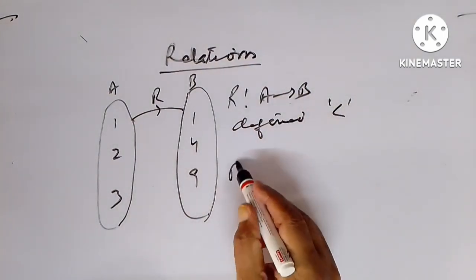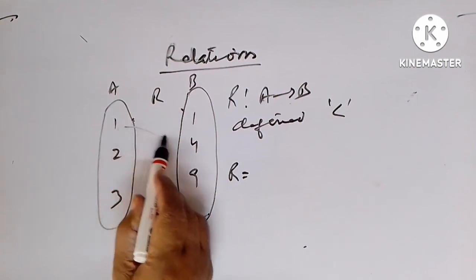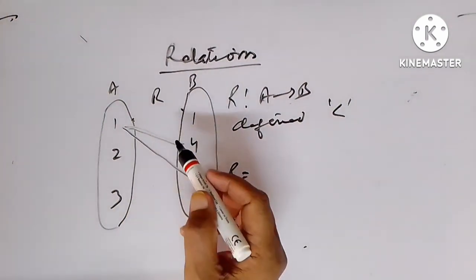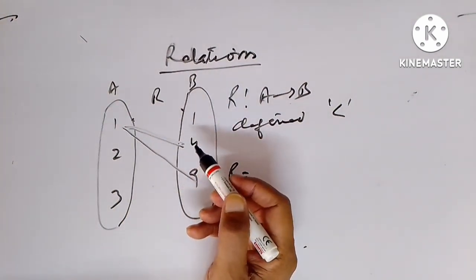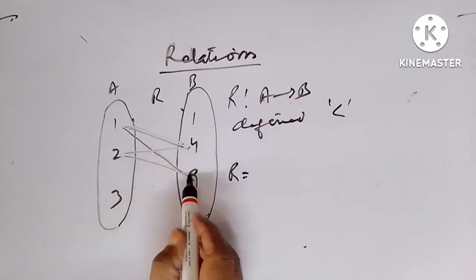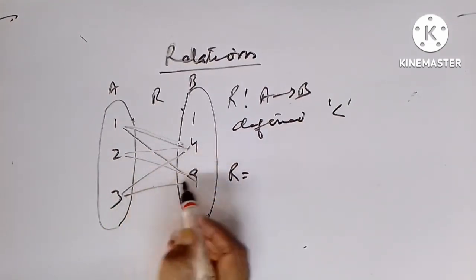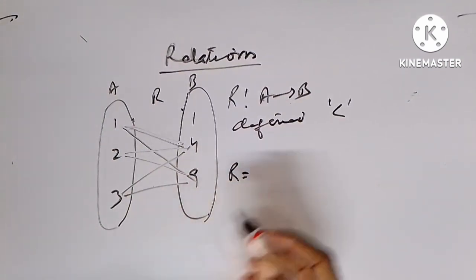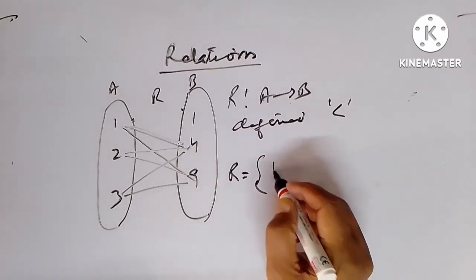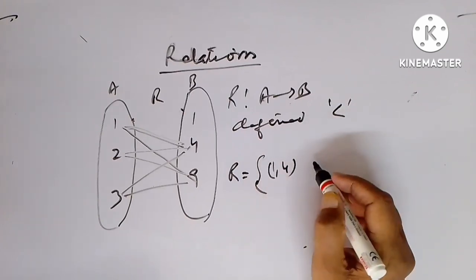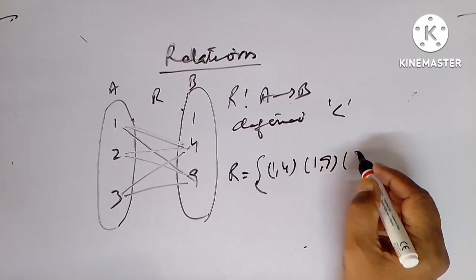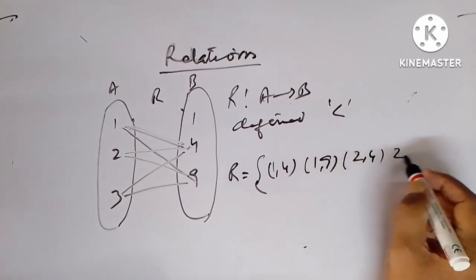So we see that 1 is less than 4 and 1 is less than 9. 2 is less than 4 and 9. 3 is less than 4 and 9. And so R is {(1,4), (1,9), (2,4), (2,9)}.